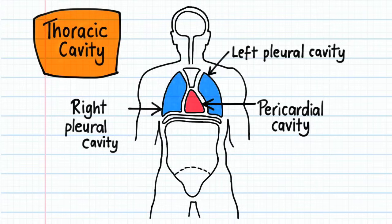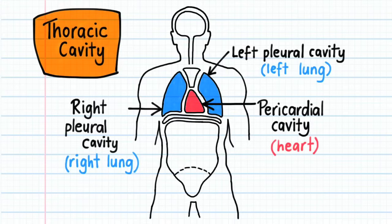The pleural cavities contain the lungs and the pericardial cavity contains the heart. Separating these three cavities is a partition called the mediastinum.